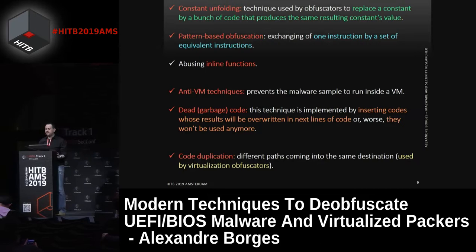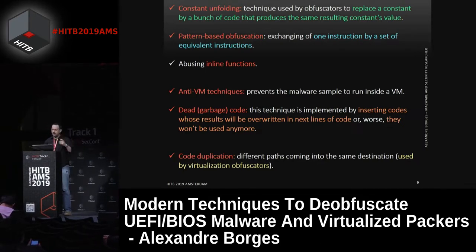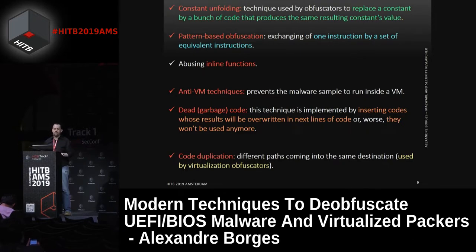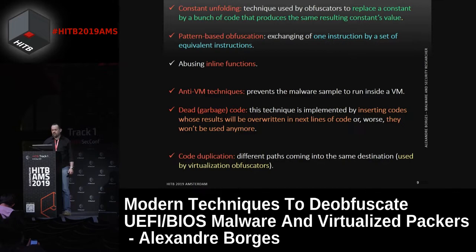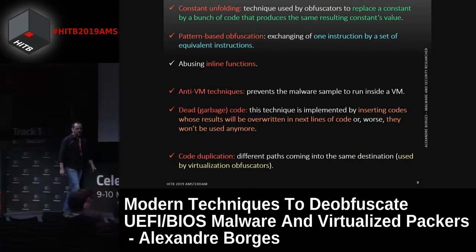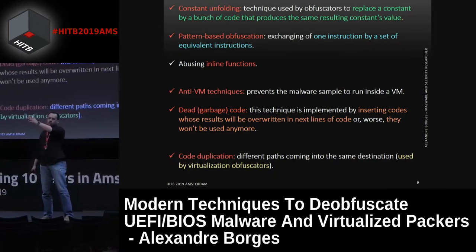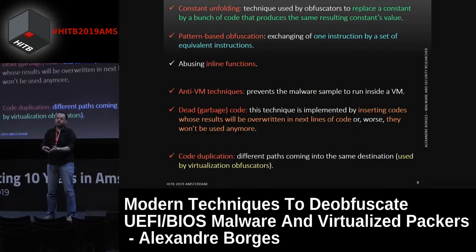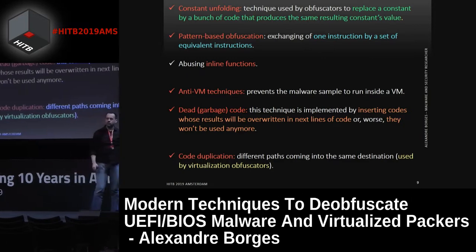For example, constant unfolding: this technique tries to replace a constant by a bunch of code which results in the same constant. Pattern-based obfuscation: trying to exchange one instruction for a set of equivalent instructions. We have many inlined functions being called from the virtualized code. We have many anti-VM techniques. We have dead code — tons of dead code. And we have code duplication, where different branches of code arrive at the same point. This technique tries to make some confusion in our minds.